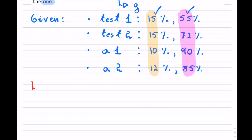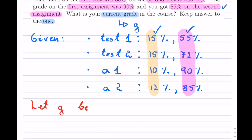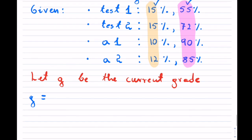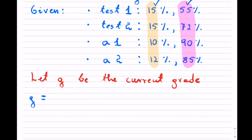So first, so let G be the current grade. And let's begin. So we have our grade equals. So we always, for these grades, we need to have our total worth on top. And I'm going to go one by one.